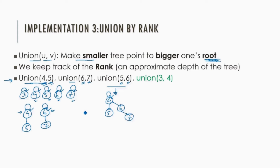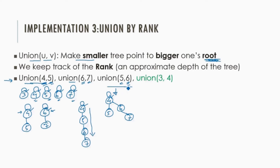In the previous approach, the resultant tree would have 4, 5, and 6 connected to 5, then 6 and 7, resulting in increased depth. However, if we perform the union(5, 6) operation by connecting the roots or representatives, then the depth is decreased compared to the previous approach.